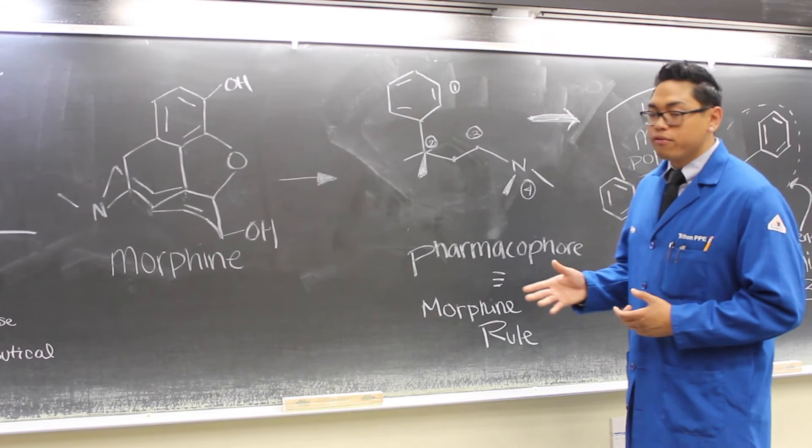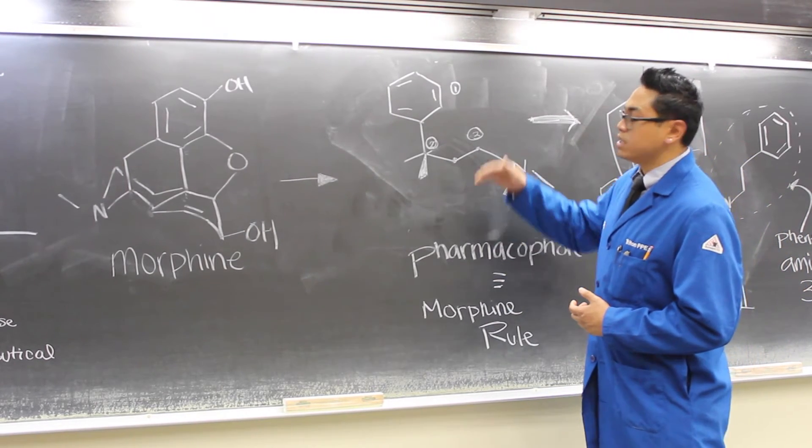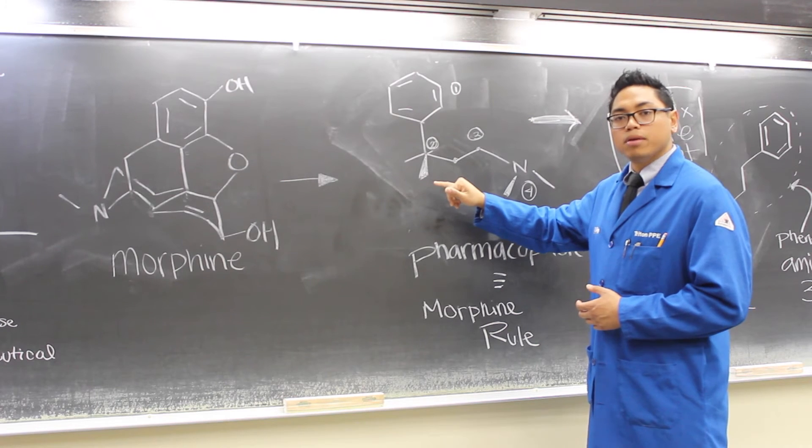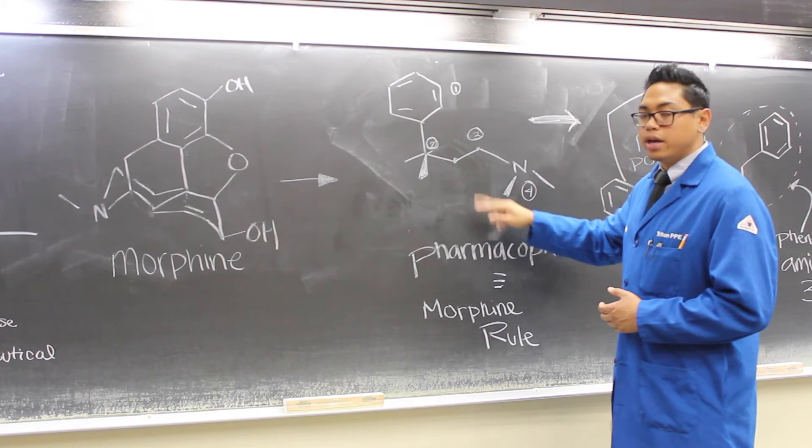A pharmacophore for morphine has been shown to be simply this benzene ring, quaternary carbon, two bridging carbons and a tertiary amine.